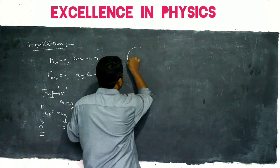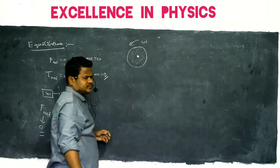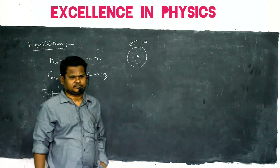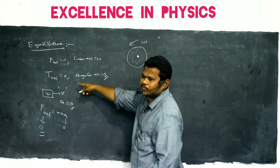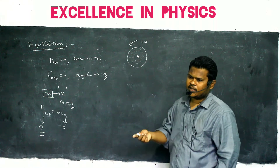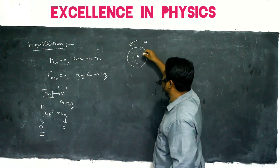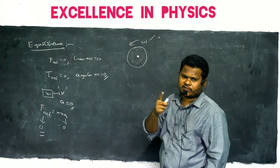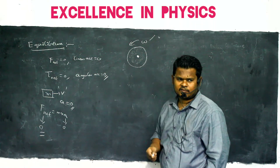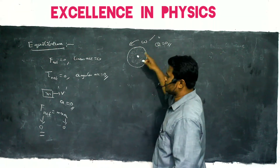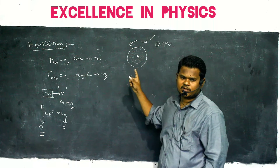Similarly, consider a disc rotating around this axis with angular velocity omega. Is it in rotational equilibrium? Equilibrium means torque acting on this body should be zero. If torque is zero, angular acceleration is zero though angular velocity exists. If this disc rotates with uniform angular velocity — covering 30 degrees every second — angular acceleration is zero. So definitely the body is in rotational equilibrium. This is translational equilibrium and this is rotational equilibrium.